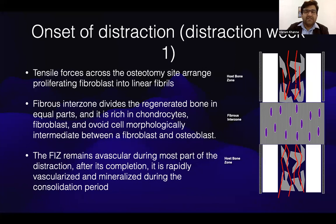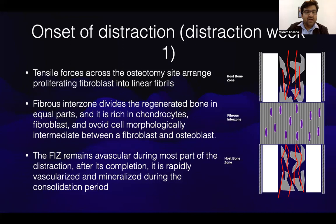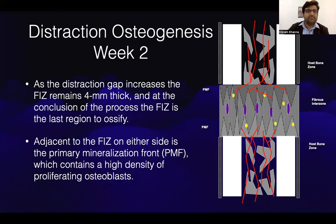At the onset of distraction — distraction week 1 — the tensile forces across the osteotomy site arrange fibroblasts into linear fibrils. A fibrous interzone divides the regenerated bone in equal parts and is rich in chondrocytes, fibroblasts, and ovoid cells morphologically intermediate between fibroblasts and osteoblasts. The fibrous interzone remains avascular during most of the distraction period; after completion of distraction it is rapidly vascularized and mineralized during the consolidation period.